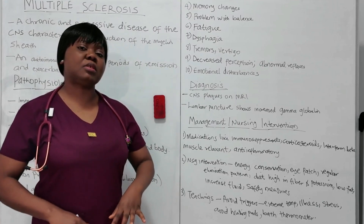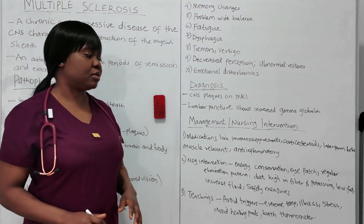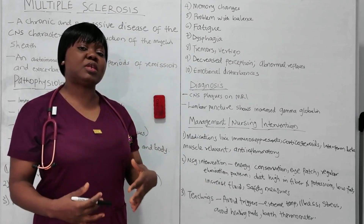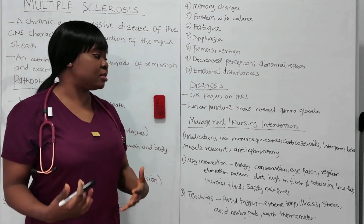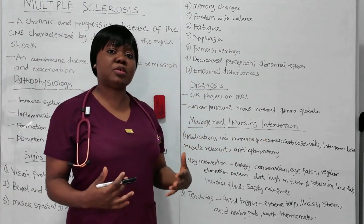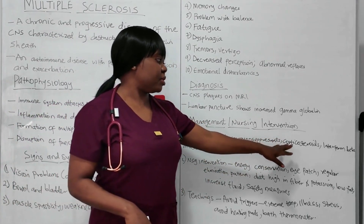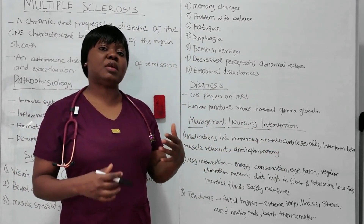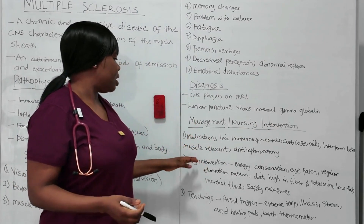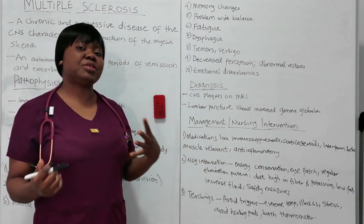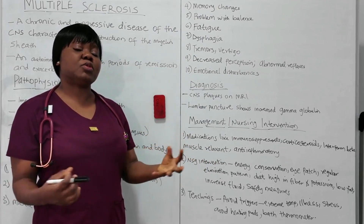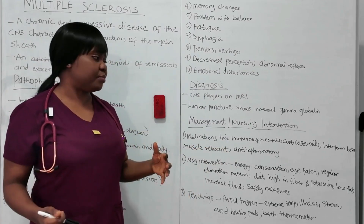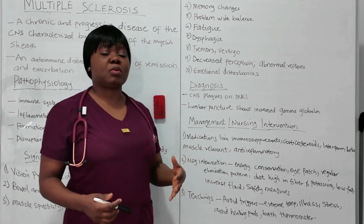For management of multiple sclerosis, including nursing interventions, medications like immunosuppressants are used because this is an autoimmune disease — to reduce the effect of the immune system attacking itself. Corticosteroids are used especially during the period of exacerbation. Interferon beta is used to prevent or reduce episodes of relapse or exacerbation. Muscle relaxants can be given, especially during times of muscle spasticity when the muscle feels stiff and tense. Anti-inflammatories can also be prescribed, since there is inflammation and demyelination occurring.